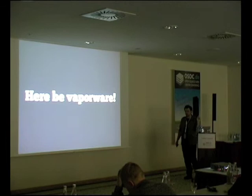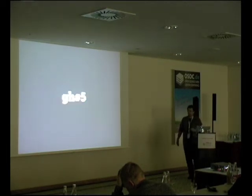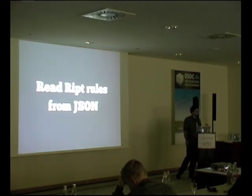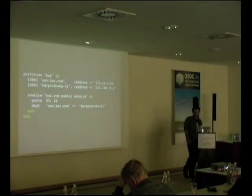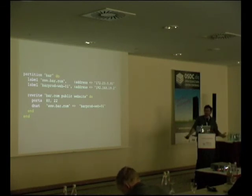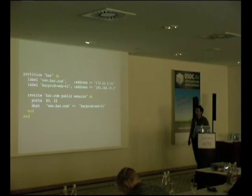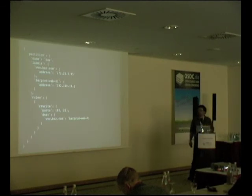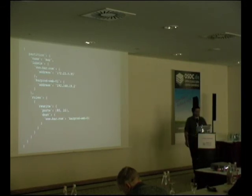Here is some vaporware — nothing is written, but all the discussion is happening in public. GitHub issue number five is called 'read RIPT rules from JSON.' Looking at petitions using the RIPT DSL, they look fairly data-heavy — just a simple DSL around manipulating data. So can we map that data into real data like JSON? It turns out we can — the DSL maps very nicely to hashes, strings, integers, and arrays in JSON.